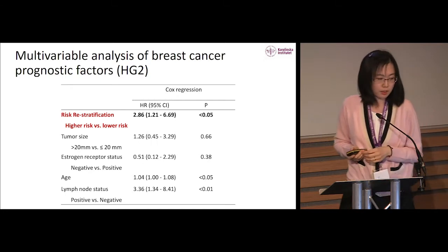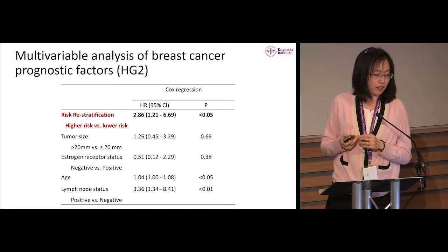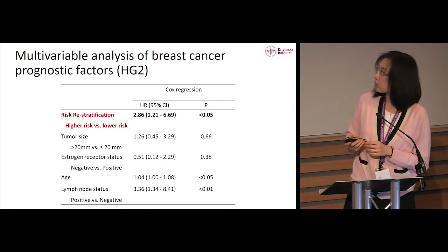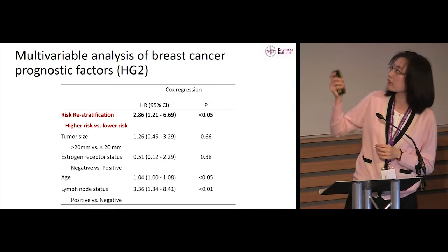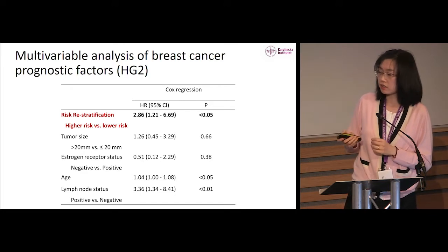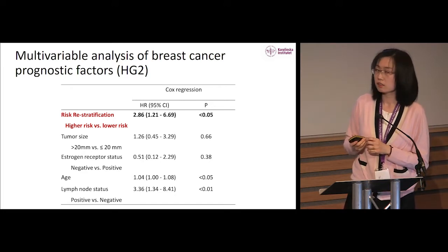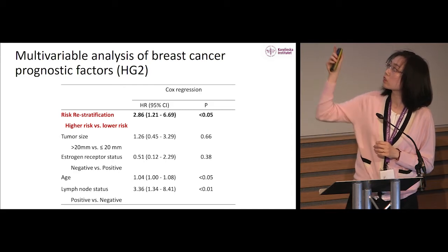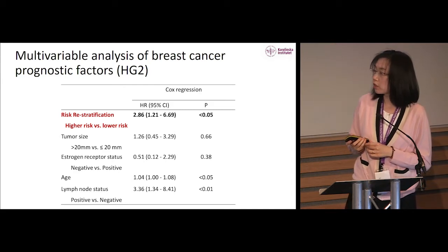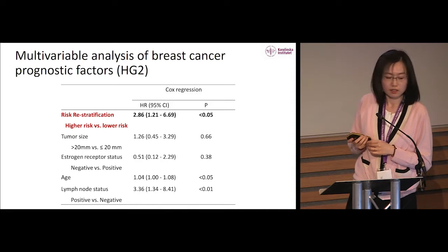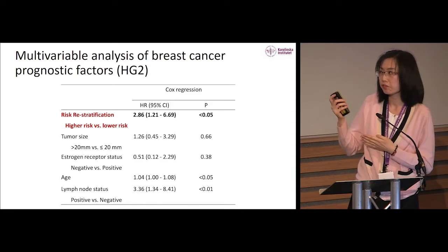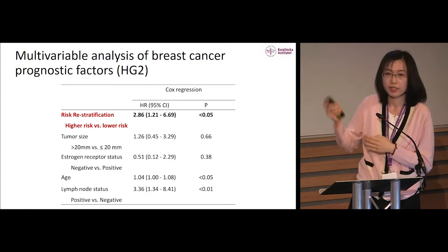We also conducted multivariable analysis using Cox regression. After adjusting for tumor size, ER status, age, and lymph node status, we have a hazard ratio of 2.86 between the two risk groups. This is a really promising result, indicating that the model is providing useful information for grade 2 patient risk stratification.